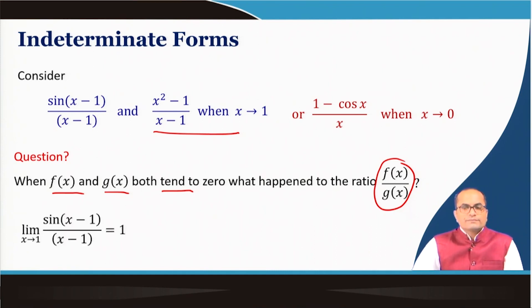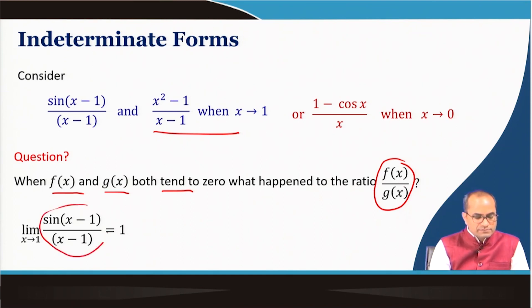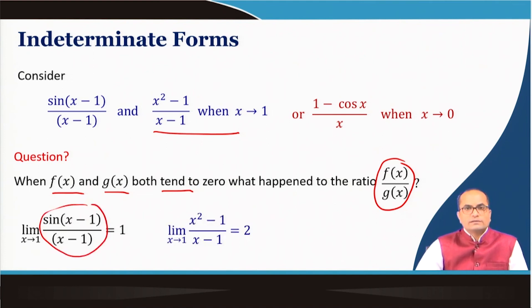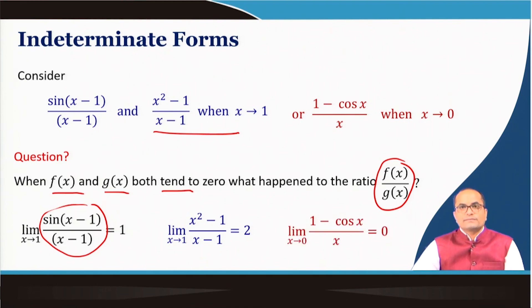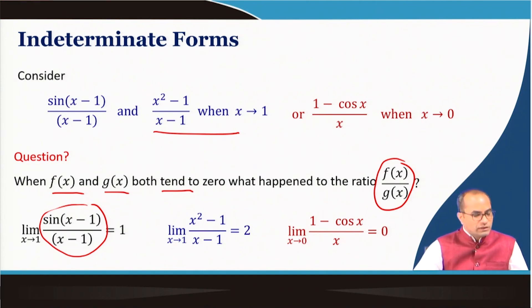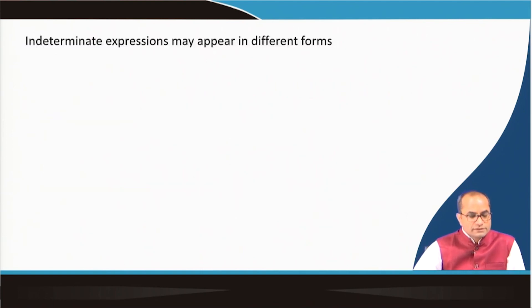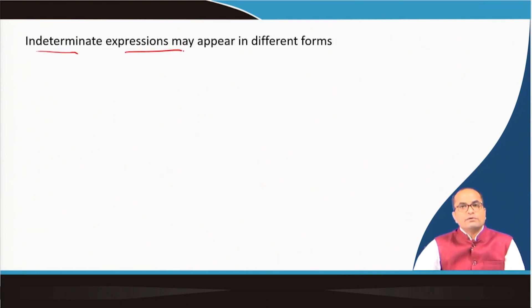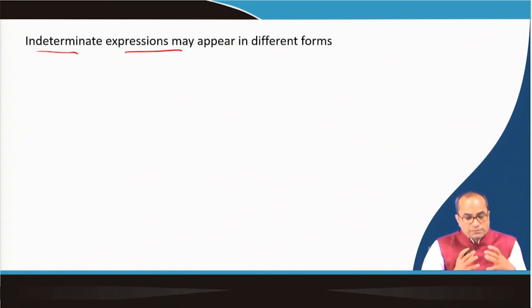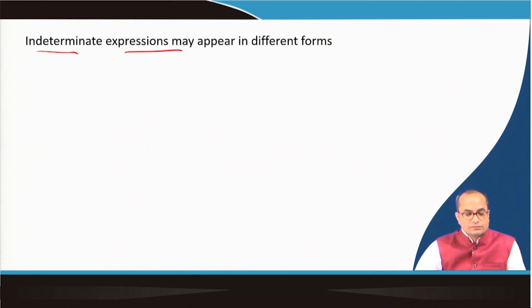We will observe in this lecture that the limit of sin(x) − 1 over x − 1 is 1, the limit of x² − 1 over x − 1 is 2, and the limit of 1 − cos(x) over x is 0. How these limits are evaluated we will learn using L'Hôpital's rule, which will be discussed in this lecture. Indeterminate expressions may appear in different forms — one form we have just discussed is the 0 divided by 0 form, which was appearing in many of those terms.